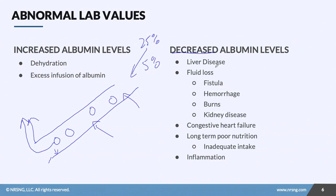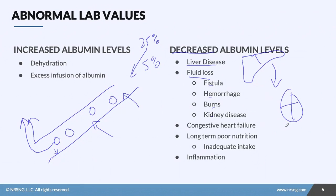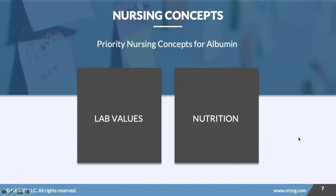Why would you see decreased albumin levels? The main cause is liver disease — if the liver isn't producing albumin, we'll obviously see a decrease. You might also see it with fluid loss from things like a fistula, hemorrhage, burns, kidney disease, or congestive heart failure. With CHF, the broken pump causes increased volume in the vessels, which dilutes albumin levels, making them look lower. Long-term poor nutrition and inflammation also decrease albumin.